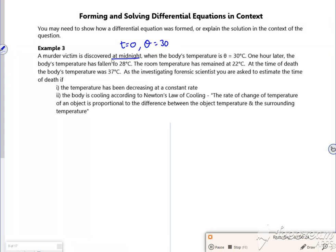One hour later, the body's temperature has fallen to 28. So I know when t is 1, θ is now 28. The room temperature has remained at 22.